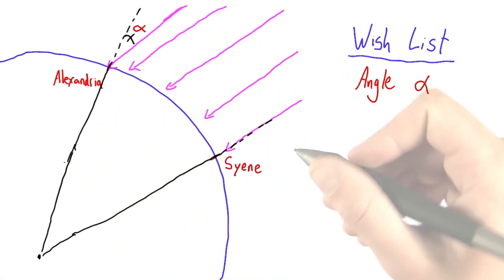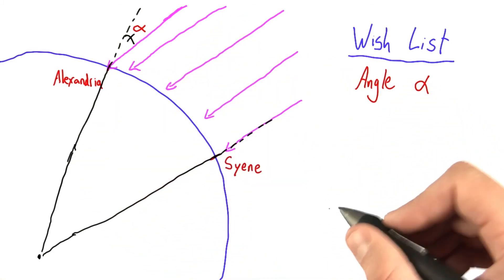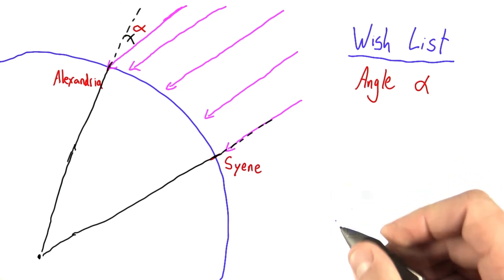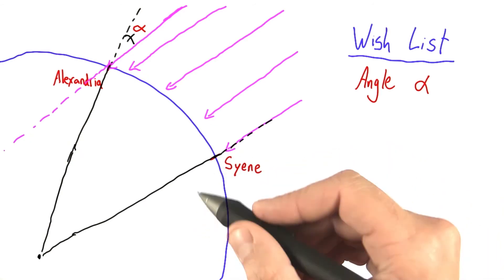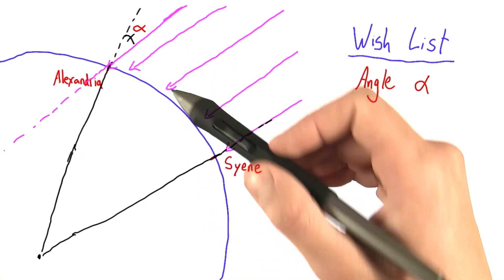Now, there's still not a ton jumping out to me. Maybe I'll extend this line. That sometimes helps me see what's going on. Ah, okay. Something just jumped out to me.